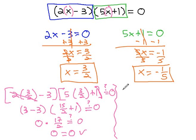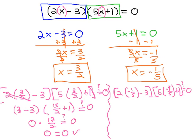Similarly, we could check 1 fifth, by doing 2, times the negative 1 fifth, minus 3, times 5, times the negative 1 fifth, plus 1. Hopefully, as I'm running out of space, hopefully, that'll equal 0.